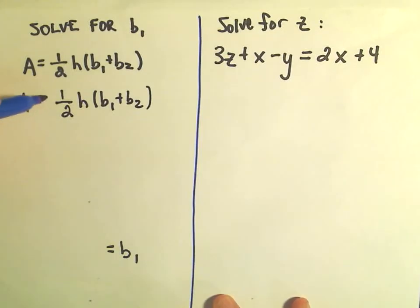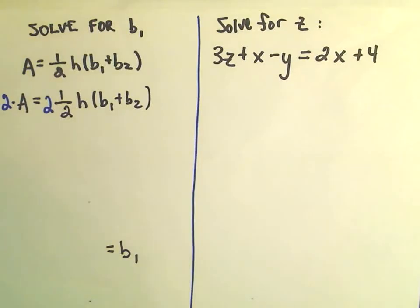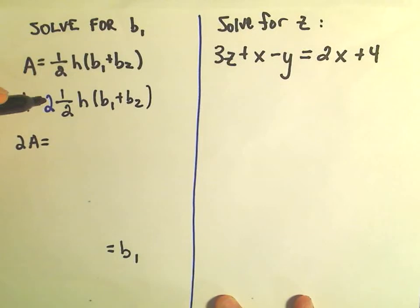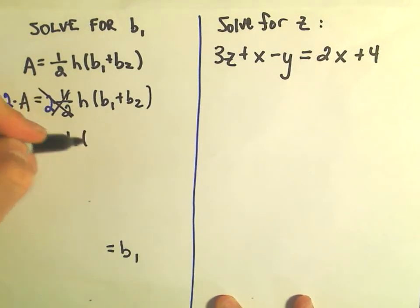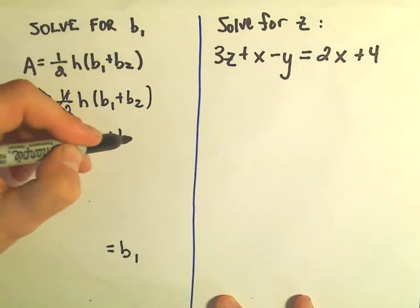So since we're dividing by two, to get rid of the one-half I could multiply by two, but if I do it to the right side, I have to do it to the left side as well. So on the left side, we're left with 2A. The two times a half is just one, so we can basically just get rid of that. And then we have h times b1 plus b2.